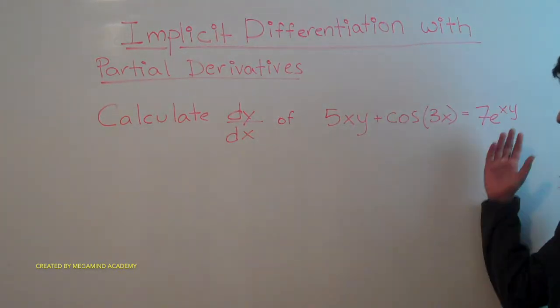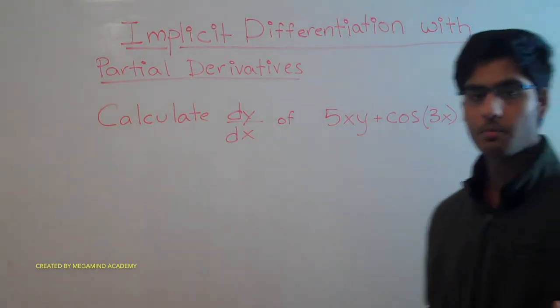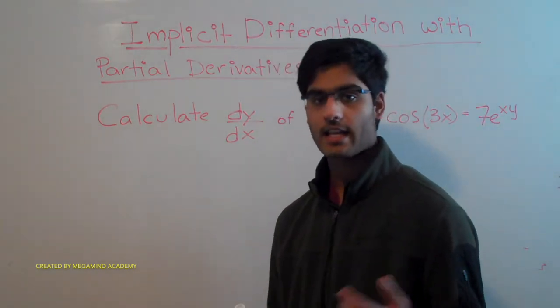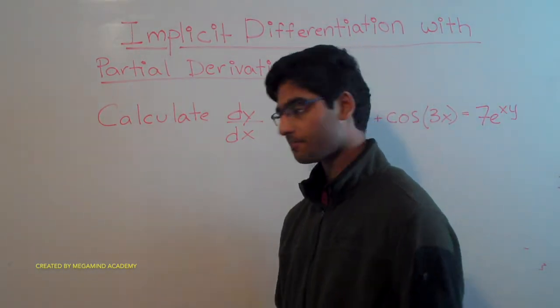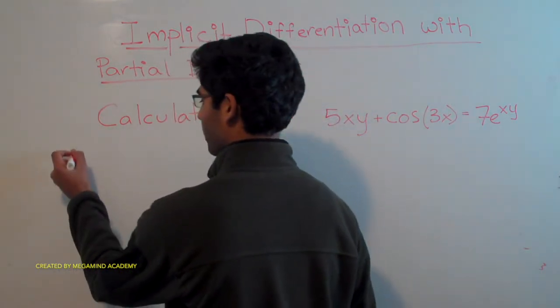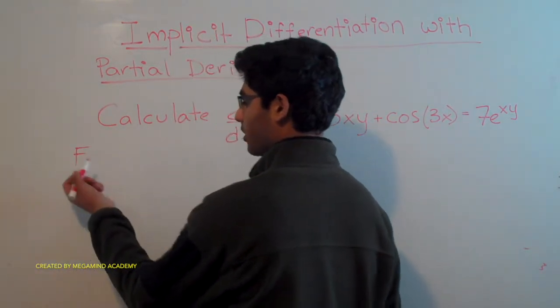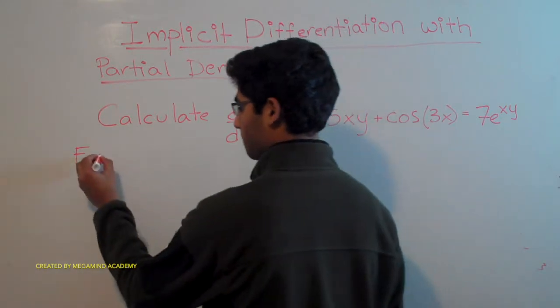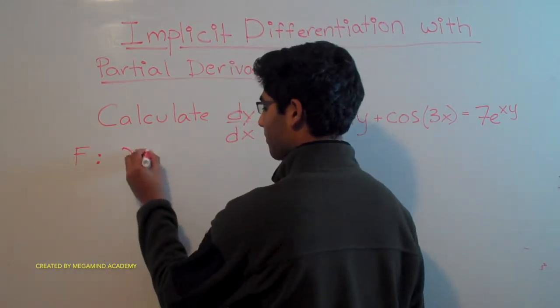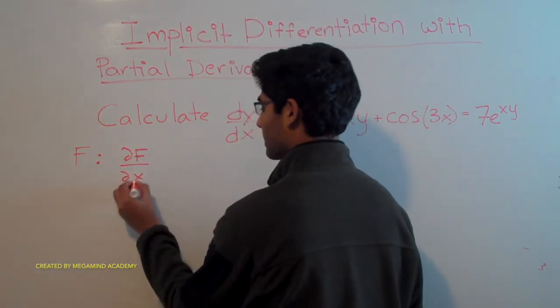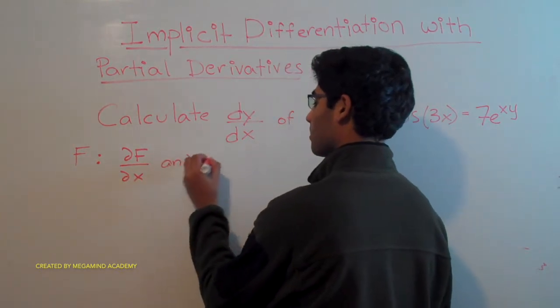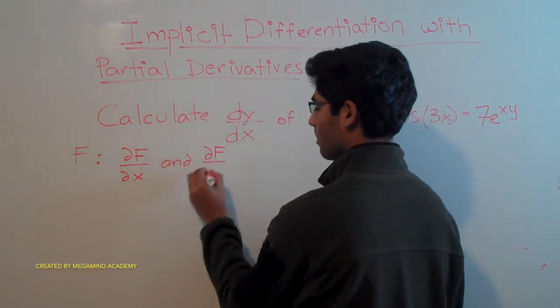So what derivatives can we get from this equation? Well, we can get the partial derivative with respect to y and the partial derivative with respect to x. So let's say the function is function f. Then we can get ∂f/∂x and ∂f/∂y.